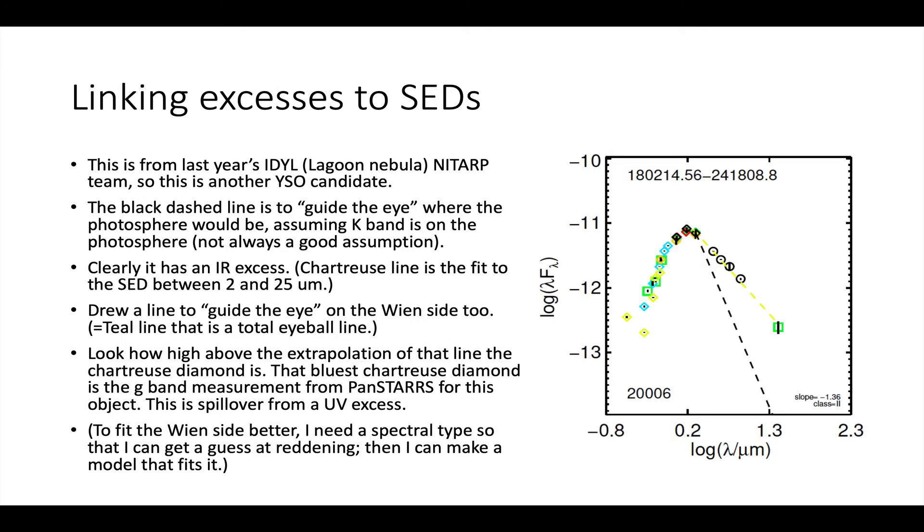So we looked at SEDs before. This one is an SED, so spectral energy as a function of wavelength. It's a log-log plot. This is from the 2019 IDLE team, which they were specifically studying Lagoon Nebula. So this is another YSO candidate. On the Rayleigh-Jeans side, I've got a black dashed line here that assumes, so if K is on the photosphere of the star, which may or may not be a good assumption, but if K is, then if the star had no dust, all the other points would fall on that black dashed line.